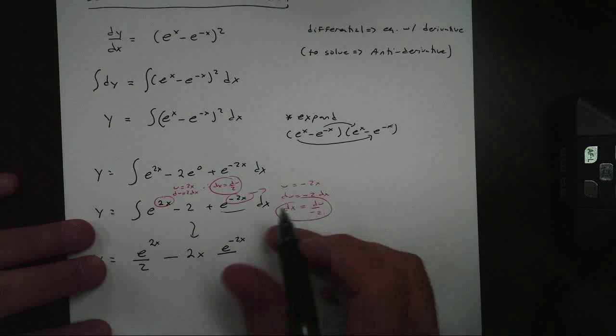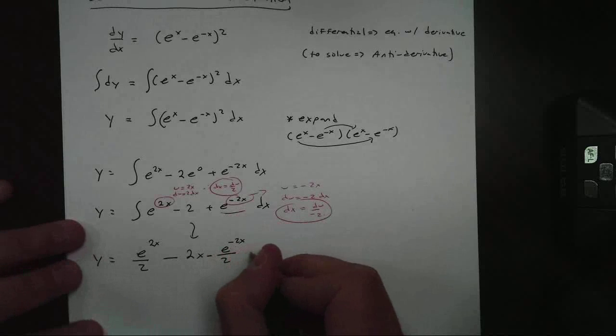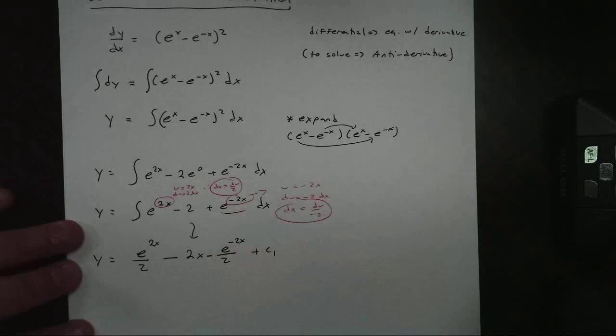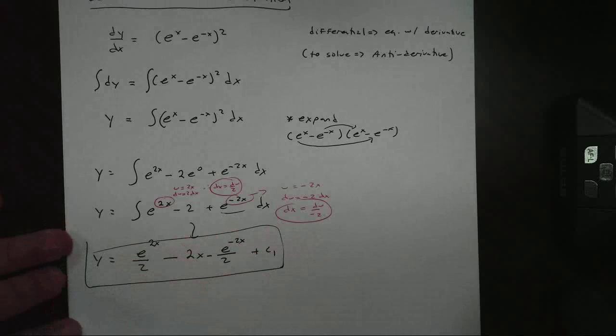But I'm going to divide it by negative 2, which makes that a minus 2 plus my initial constant there, c1. And there's your antiderivative. Very quick and easy.